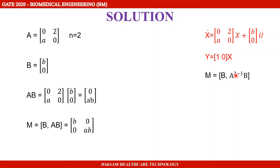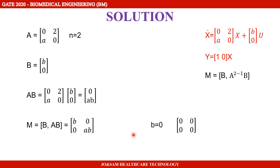The controllability matrix M is [B, A·B], where A·B equals the matrix [0, A] multiplied by [B; 0]. Evaluating the matrix: first row, first column is B; first row, second column is 0; second row, first column is 0; second row, second column is A·B.